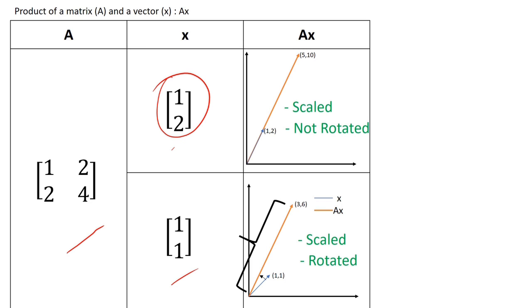A vector that undergoes pure scaling without any rotation is known as the eigenvector corresponding to that matrix. And the scaling factor is known as the eigenvalue. And here, it will be 5 which means that the resultant is 5 times that of the X.